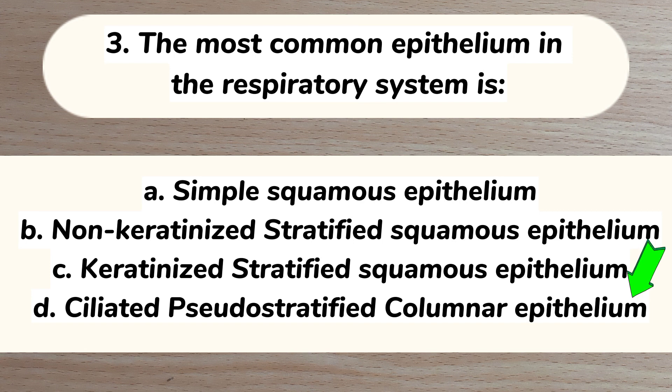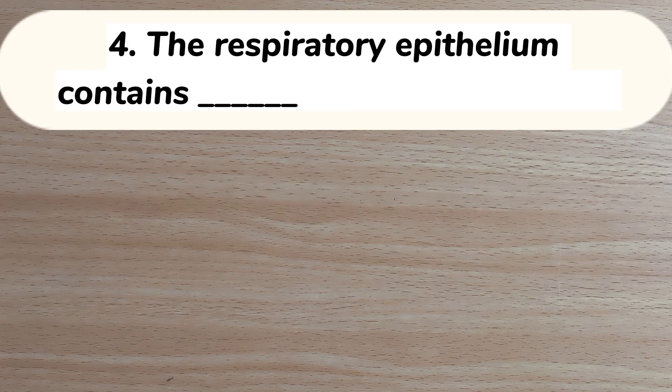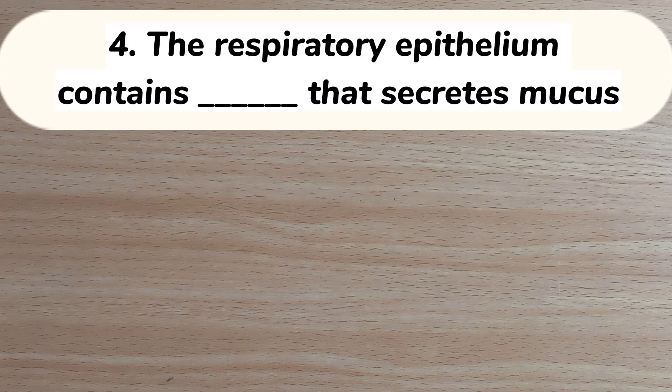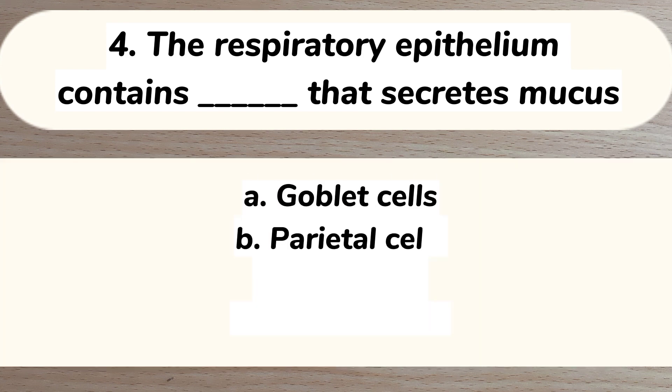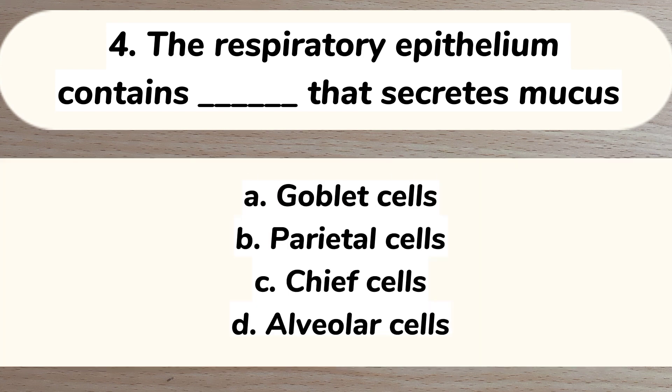Number 4. The respiratory epithelium contains blank cells that secrete mucus. A. Goblet cells. B. Parietal cells. C. Chief cells. D. Alveolar cells. Answer: A. Goblet cells.